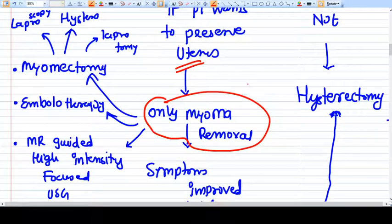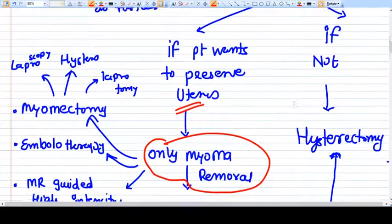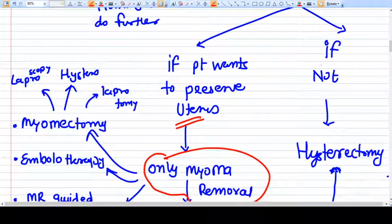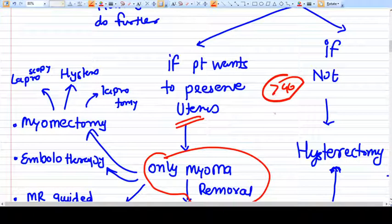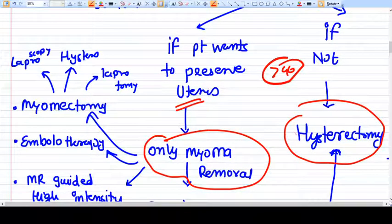So if they want to preserve the uterus then only myoma removal will be there. If the patient does not want to retain its uterus, if the patient's age is more than 40 and already it is multipara, they don't want any further child in their life, then yes you can go for hysterectomy instead of myomectomy because once you remove only myoma then there are chances of recurrence.